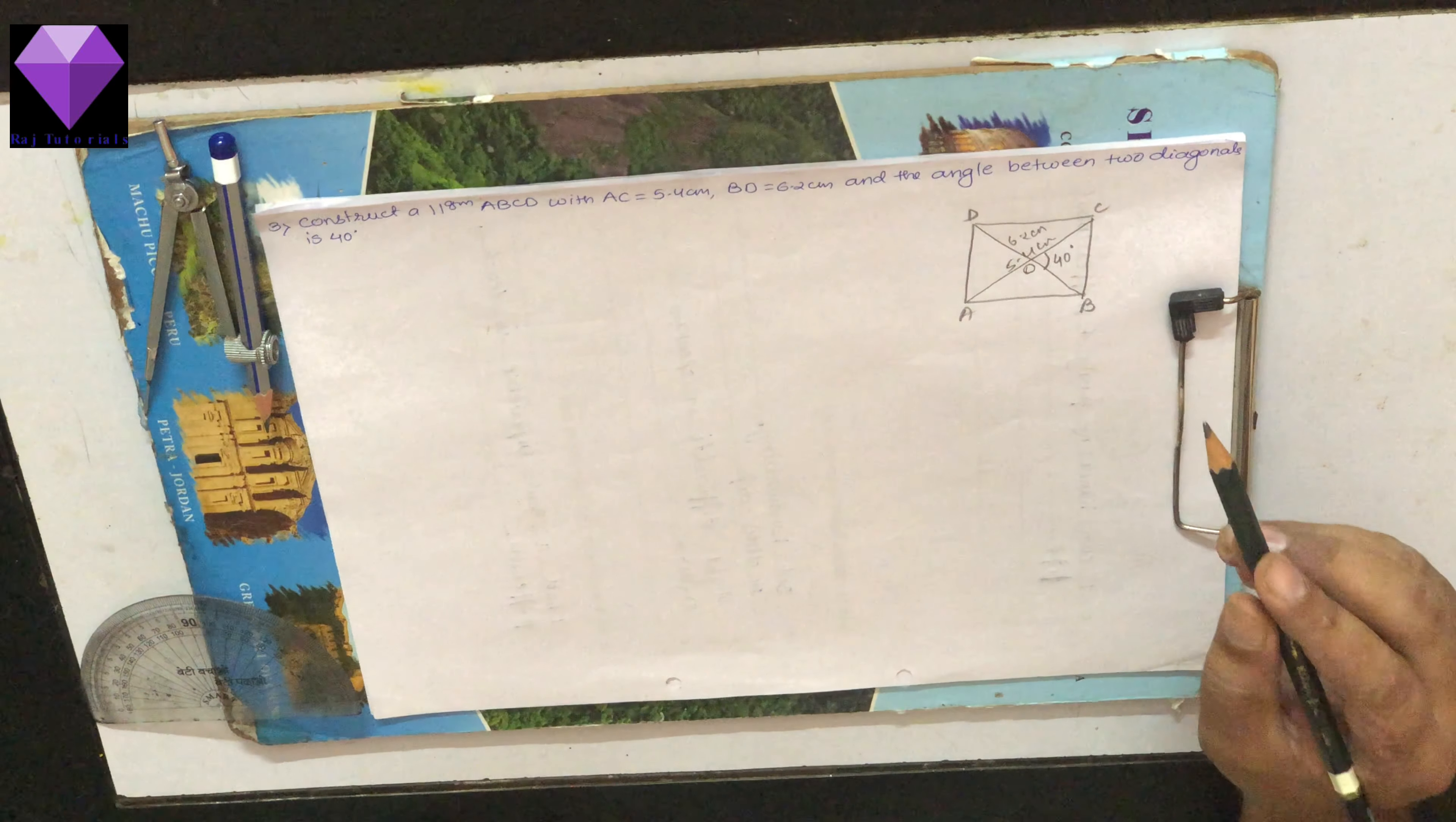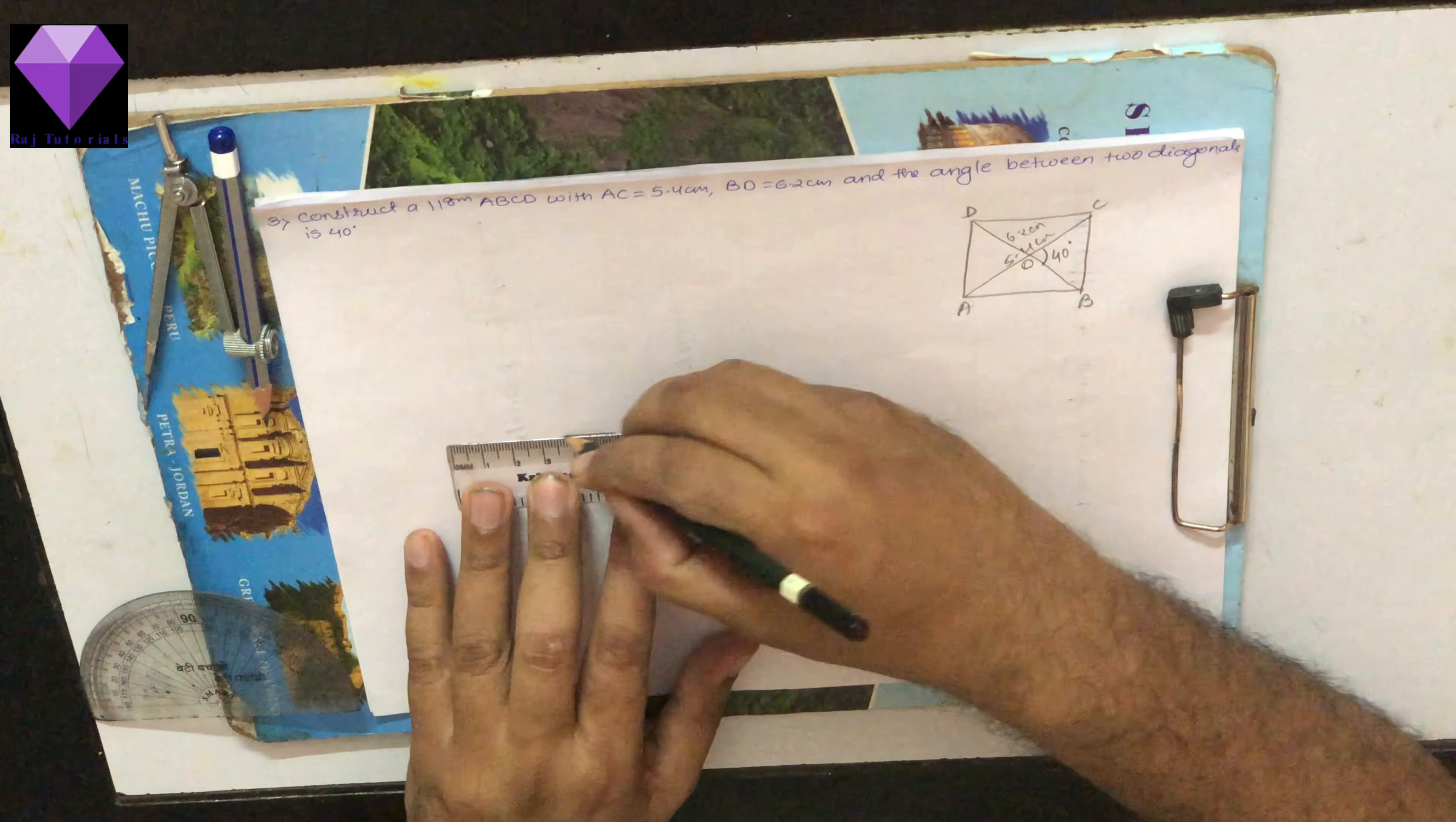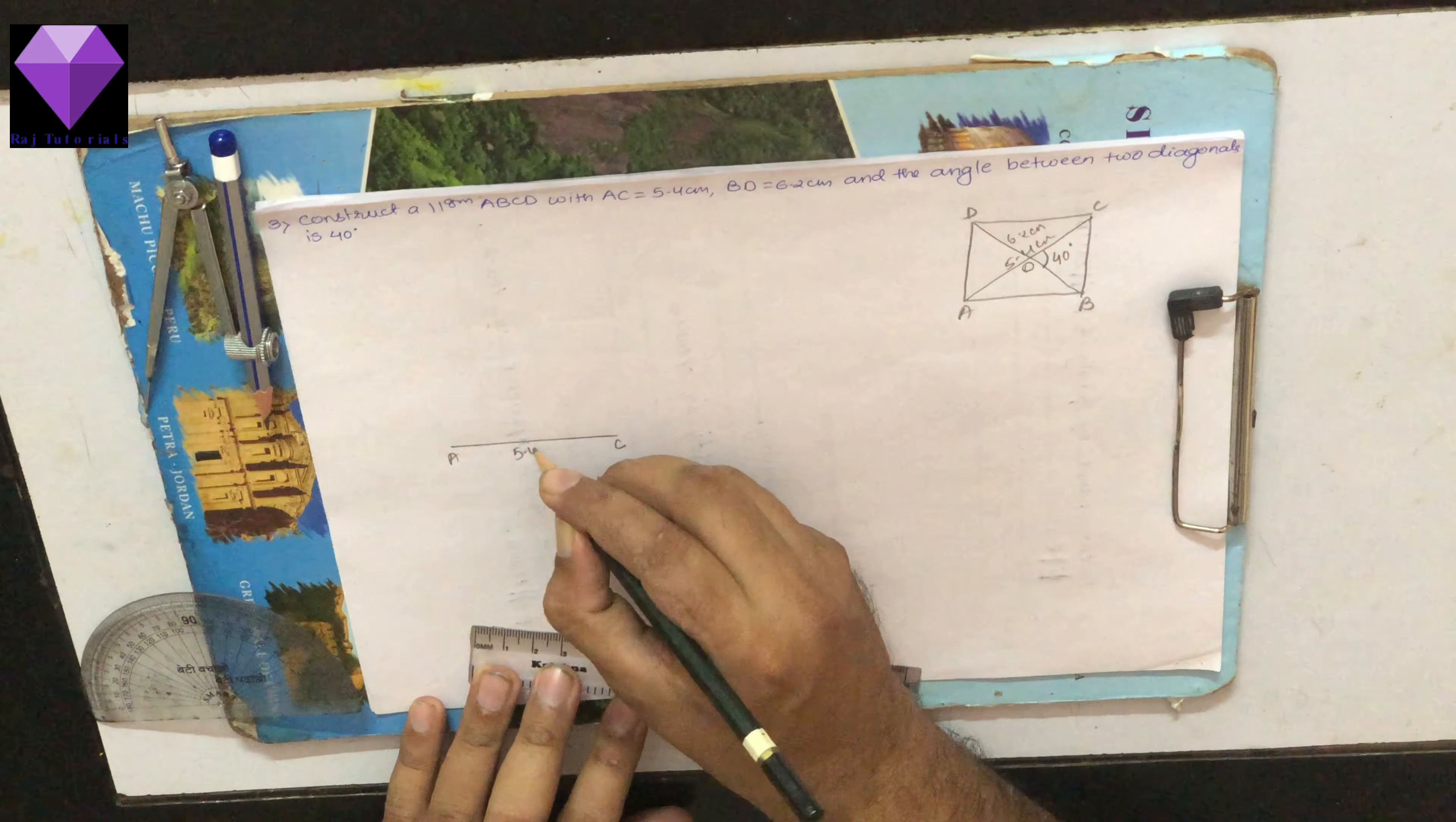So to make this, first of all I will draw any one diagonal. Let us take 5.4 cm as the first diagonal and that is AC. So first I will write AC 5.4 cm.